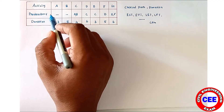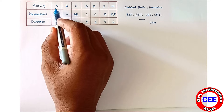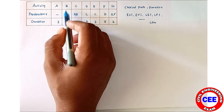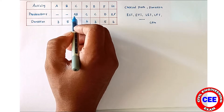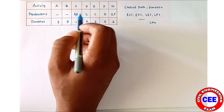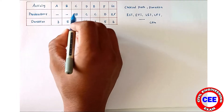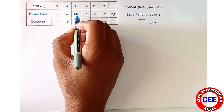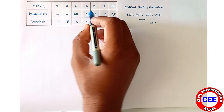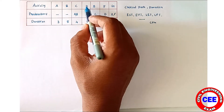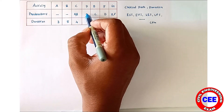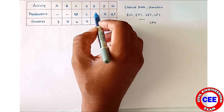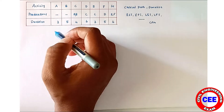The predecessor relationships are also given. For activity A, there is no predecessor, and for activity B, there is no predecessor. But for activity C, A and B are the predecessors. So C will be started after the completion of A and B. D activity will be started after the completion of C, and likewise, E activity will be started after the completion of C.